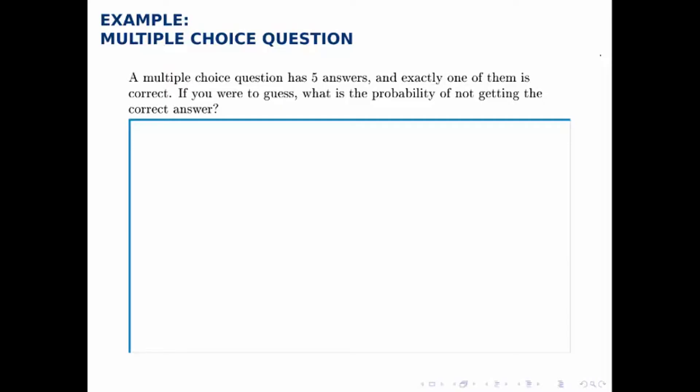This example is pretty simple, but we illustrate again how we calculate the probability that something doesn't occur. So the probability you don't get the correct answer is one minus the probability that you get a correct answer.